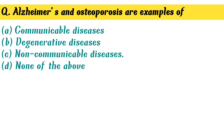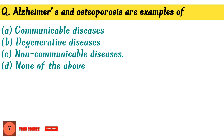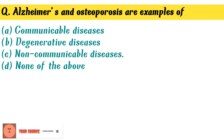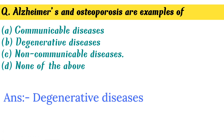Alzheimer's and osteoporosis are examples of — Option B. Degenerative diseases is the correct answer.